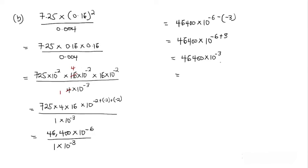Ten to the power negative three means we move the decimal point three places to the left. Starting from the end of forty-six thousand four hundred, we move the decimal one, two, three places, giving us forty-six point four as our final answer. Since we were not asked to leave the answer in standard form, forty-six point four is our answer.